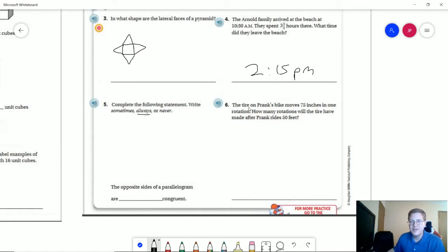And so number six, the tire on Frank's bike moves 75 inches in one rotation. How many tire rotations will we have if we have 50 feet? So we have 12 inches in a foot. And so we would do 50 times 12. And I probably should have flipped those over to make it a little bit easier to do this. But we are going to have 600 inches.